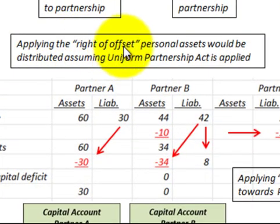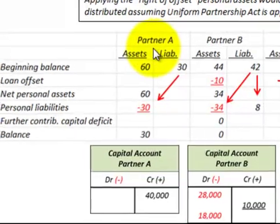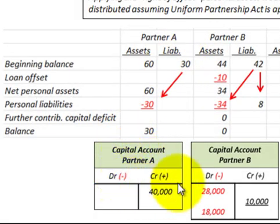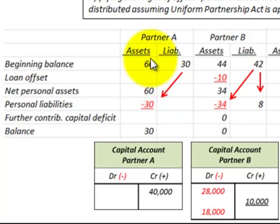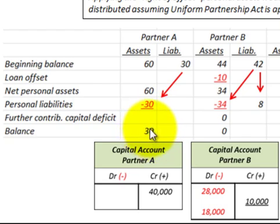Now let's look at applying the right of offset for personal assets distributed assuming the Uniform Partnership Act is applied. For partner A: assets of $60,000, liabilities of $30,000, and a capital account with a credit balance of $40,000 that the partnership owes them. Net assets are $60,000 reduced by personal liabilities of $30,000, giving a net distributable amount of $30,000.